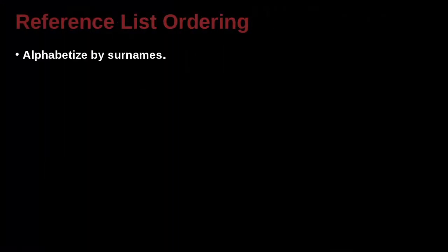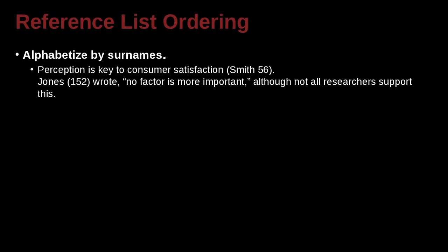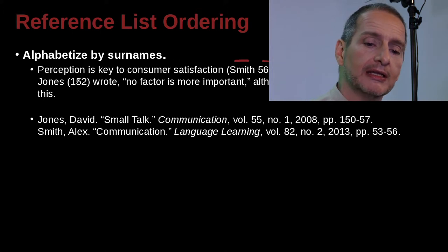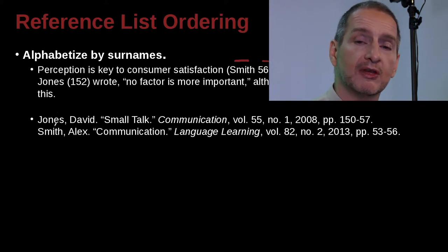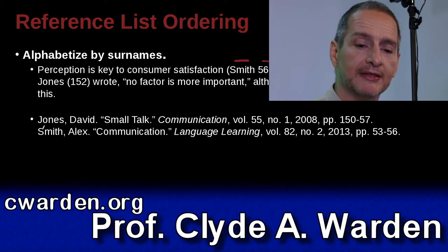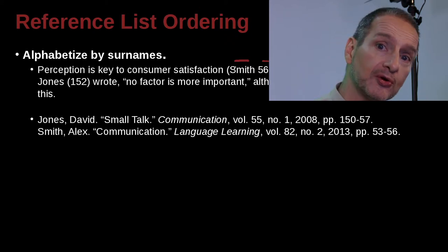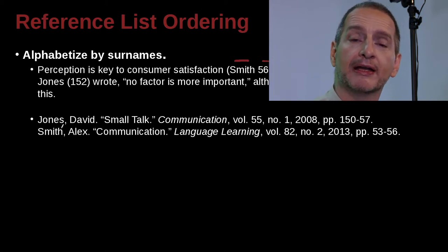Let's look at how we actually make the list and how we order it. Here's an example of writing inside a research paper or thesis. The sentence cites Smith on page 56, and another sentence references Jones on page 152. So how do we put these into the reference list? The reference list would show Jones, David first and Smith, Alex second — because J comes before S alphabetically, regardless of the order they appear in the text.